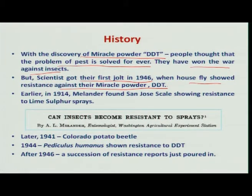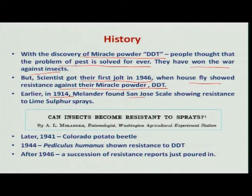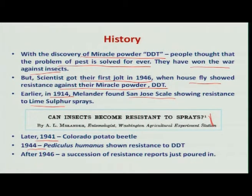Even as far back as 1914, before the synthesis of synthetic insecticides or before understanding the insecticidal property of DDT in 1939, Melander in 1914 noted that the San Jose scale insect had developed resistance to lime sulfur. He wrote an article titled 'Can Insects Become Resistant to Sprays?', which at that time nobody took seriously. Later, during 1941 the Colorado potato beetle developed resistance, then the medical pest Pediculus showed resistance to DDT during 1944. After 1946, reports of resistance from different parts of the globe started pouring in.